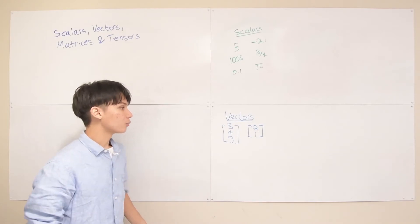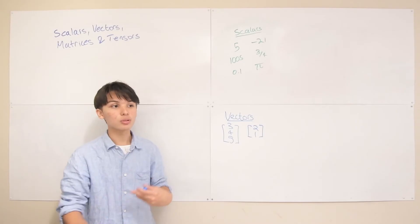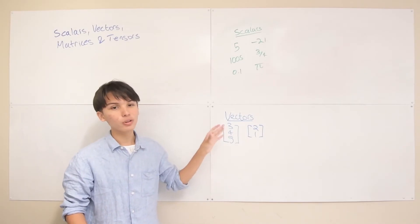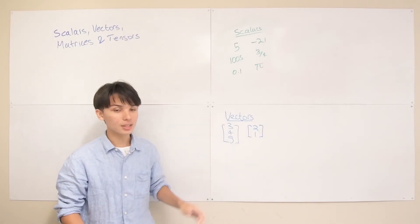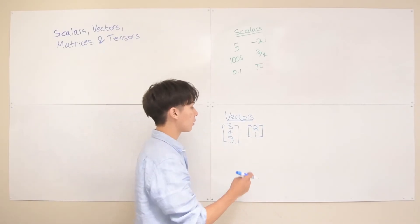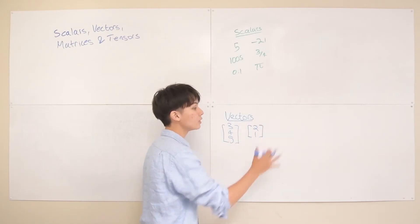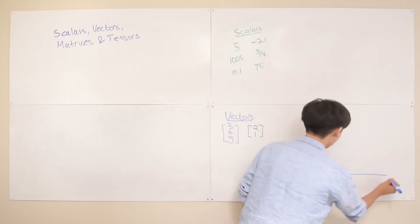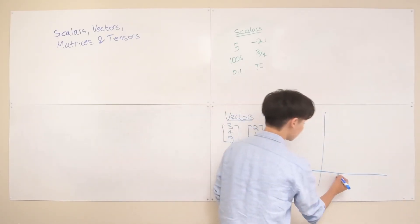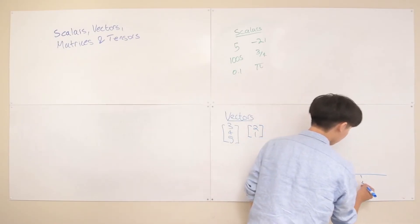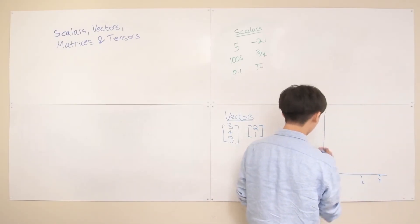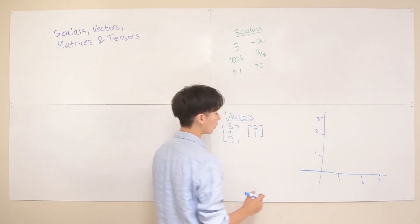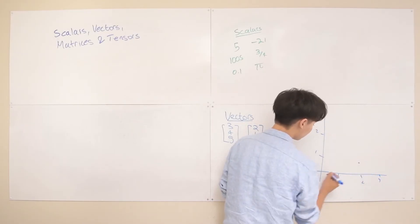We can understand vectors geometrically in a way we'll use throughout this course. You can understand vectors to represent some coordinate or point in space. For example, with [2, 1], we can represent this as a point in two-dimensional Cartesian space. The vector [2, 1] corresponds to a point at x equals 2 and y equals 1. This point we often represent with an arrow from the origin going to that point.